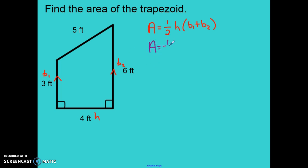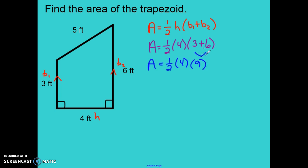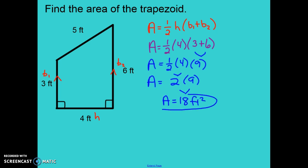Substituting into the formula: A equals one-half times 4 times the sum of 3 and 6. Following order of operations, we add inside the parentheses first: 3 plus 6 is 9. Then half of 4 is 2, and 2 times 9 is 18. So the area of this trapezoid is 18 square feet. This is also called a right trapezoid because it has two right angles.